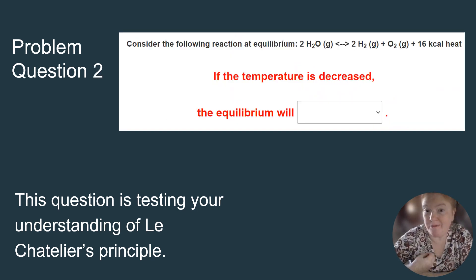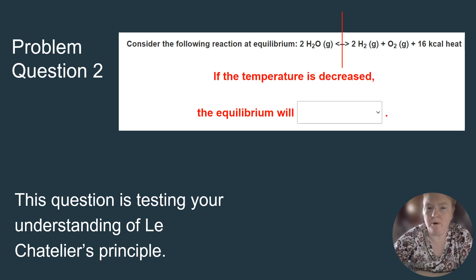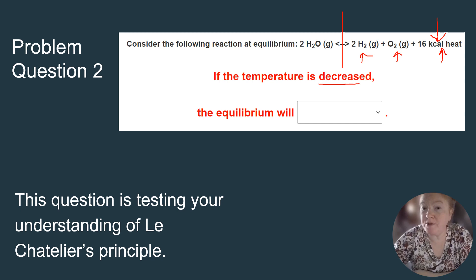Here's another question about equilibrium and Le Chatelier's principle — this one about temperature. The equation includes kilocalories of heat, and the temperature is decreasing. To resolve that stress, the system must make temperature go up. Everything on the same side as the temperature — O2 and H2 — must also go up to release the stress.